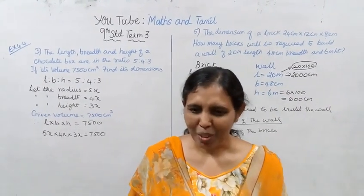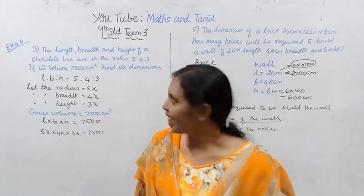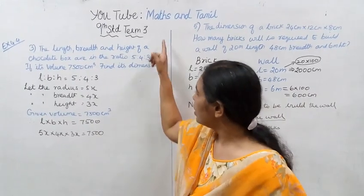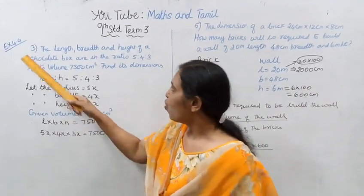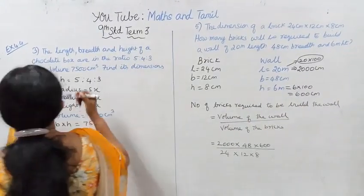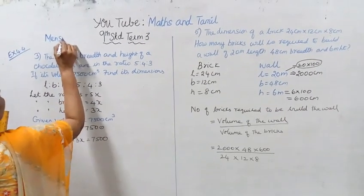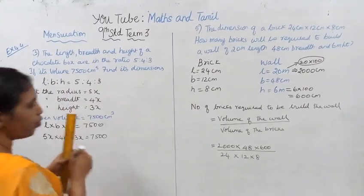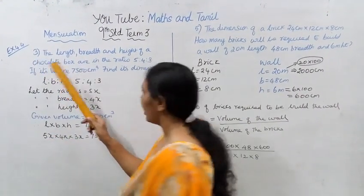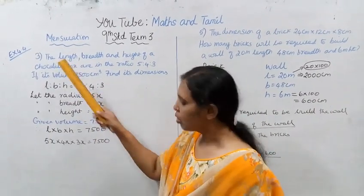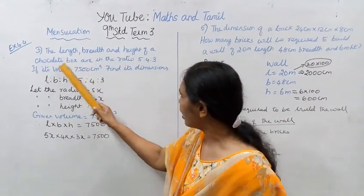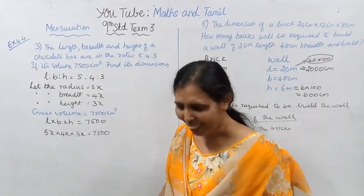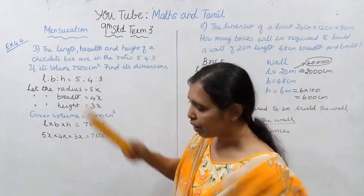Hello students, welcome to Max and Travel channel. Now 9th standard term 3 mensuration exercise 4.4. The length, breadth and height of a chocolate box are in the ratio 5:4:3. The chocolate box is a cuboid.